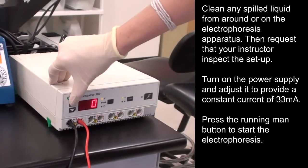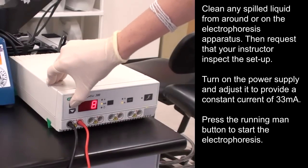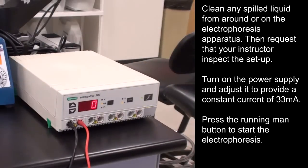Clean any spilled liquid from around or on the electrophoresis apparatus. Then request that your instructor inspect the setup. Turn on the power supply and adjust it to provide a constant current of 33 mA. Press the running man button to start the electrophoresis.